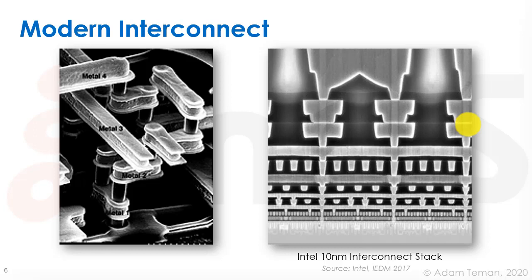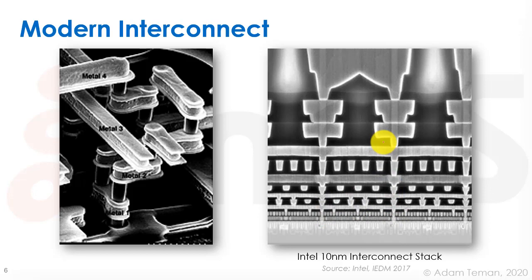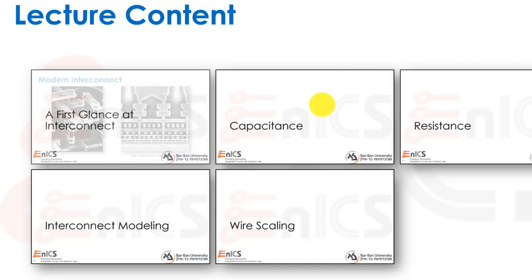Looking at modern interconnect, there's a nice picture where they etched away all of the interlayer dielectrics between the different metal layers. You can see metal layers like metal 1, with vias going up to metal 2, and vias going up to metal 3, and so forth — a very cool and complex structure, kind of like a complex interchange on a highway. If we look at a newer metal stack, this is a cross-section of an Intel 10 nanometer interconnect stack — quite complex with many metal layers.